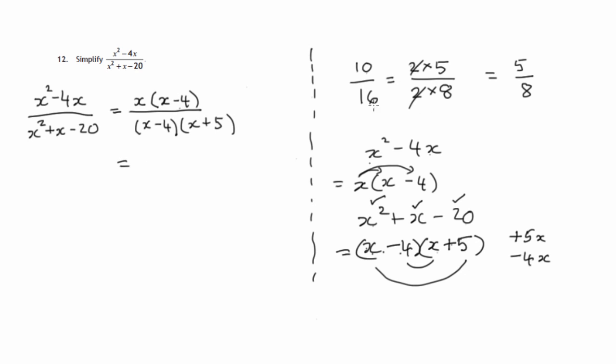Now, just as in canceling down 10 over 16, you notice there was a factor in common. 2 was a common factor, top line, bottom line, and we could therefore cancel it off. Similarly, x minus 4 appears both in the top and the bottom of this fraction. So that can be canceled off. And it leaves you with x over x plus 5 as the final simplified form of this fraction.